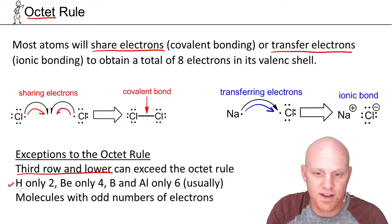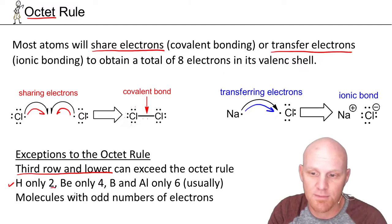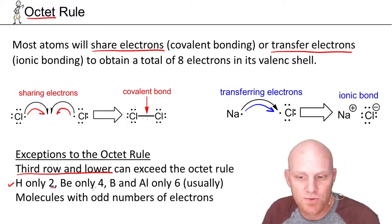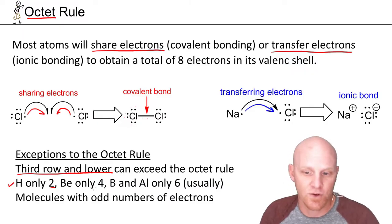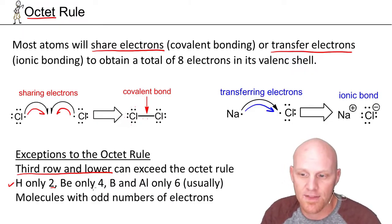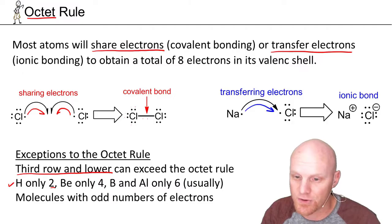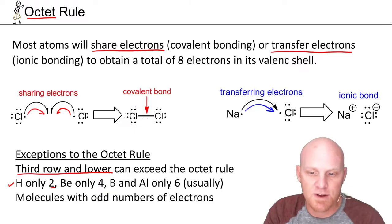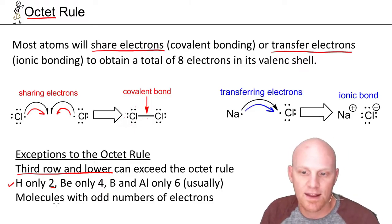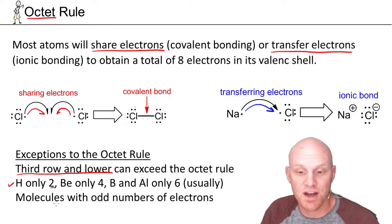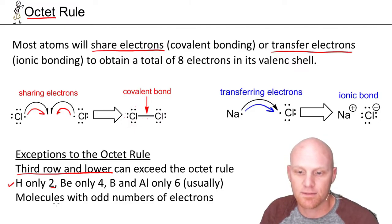The second exception: those that go under the octet rule. Hydrogen only wants two, and we'll see this all the time. Beryllium only four — it's only got two valence electrons, so if it shares with two different atoms it'd have four total. Boron and aluminum only six. We'll see aluminum and boron every once in a while; probably won't see beryllium at all in organic chemistry. Third exception: molecules with odd numbers of electrons. Things like nitric oxide, NO, has 11 electrons, so somebody has to violate the octet rule — but again, not likely an example we'll see in organic chemistry.